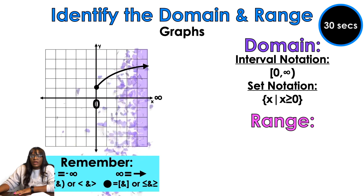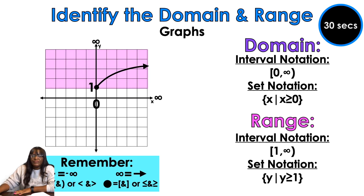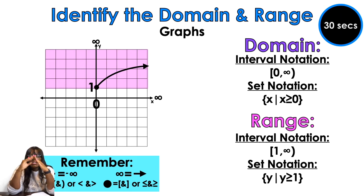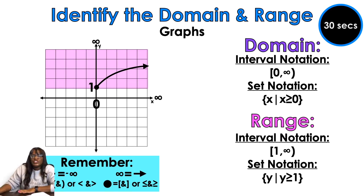So that's why we're okay with this: x is greater than or equal to zero. Now for our range, we're going to start at the circle and go up forever and ever. That arrow tells us it's going up forever and ever. So we're going to start at one and go all the way to infinity — bracket one comma infinity, close parentheses. In set notation: y is greater than or equal to one, because the bottom is y equals one since that's a closed circle.